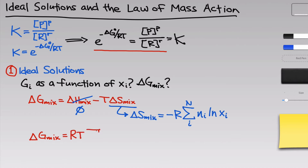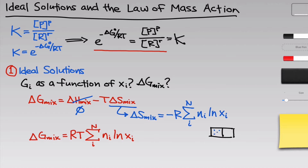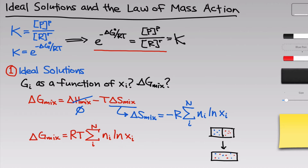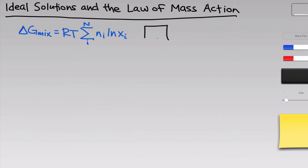Taking enthalpy off the table, which we can do for ideal gases, this is the free energy change associated with allowing two ideal gases to mix — it's the free energy change as a function of the mole fraction of each component. Delta G of mixing is most negative when the two mole fractions are equal. Why is delta G of mixing negative even though everything appears positive? Because the natural log of X sub i is less than zero since X sub i must be less than 1, so the overall expression will be negative.